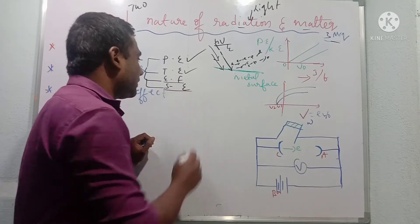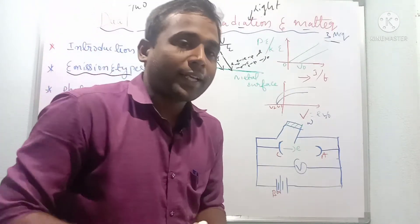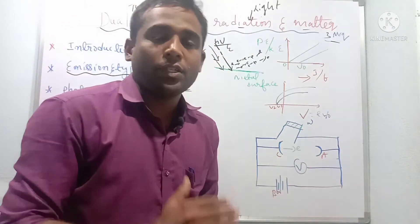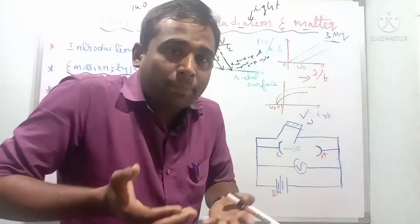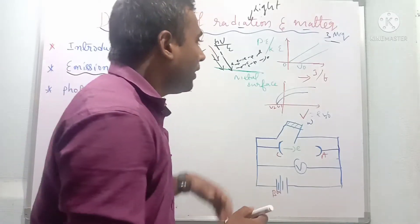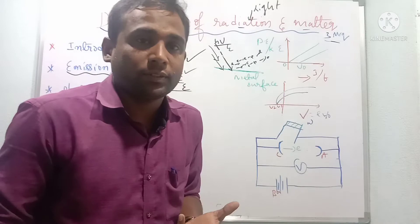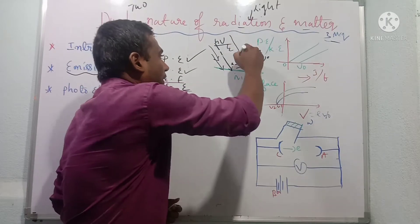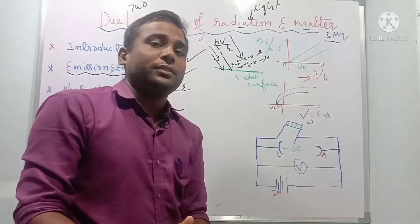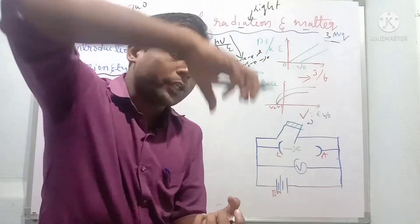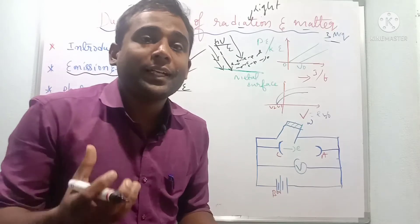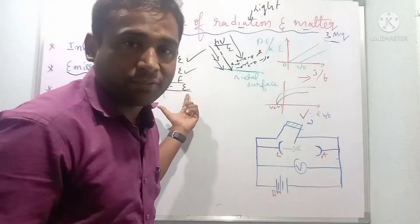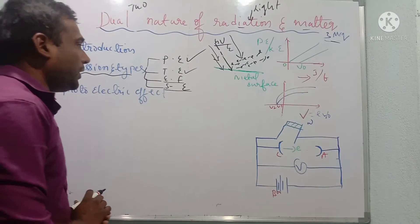Secondary emission: when we supply electric field, heat energy, or light to a material, it liberates some electrons. These emitted electrons then collide with other electrons, and as a result of this collision process more electrons come outside — that is called secondary emission. It depends upon the number of electrons and the nature of the material.